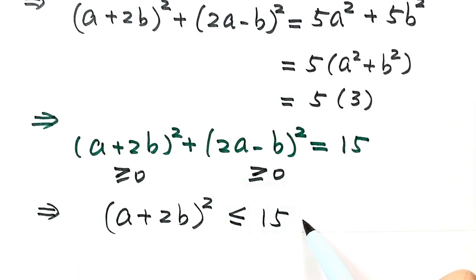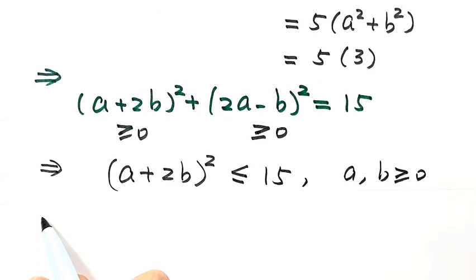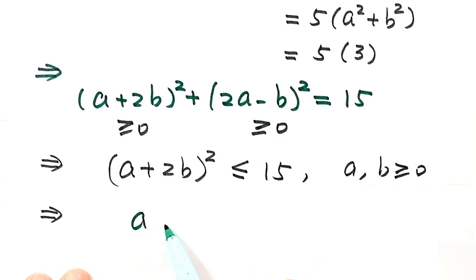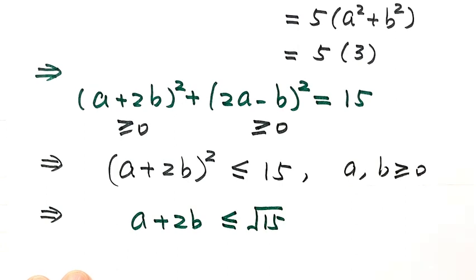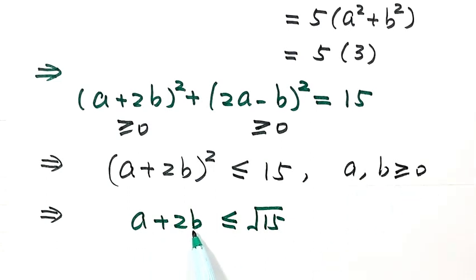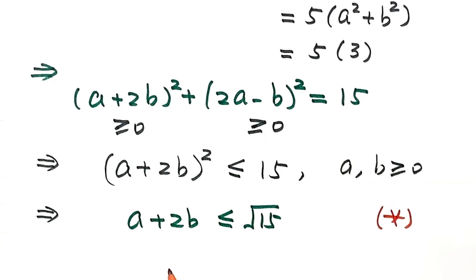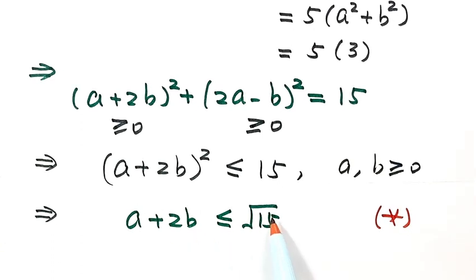Since a and b are both greater than or equal to 0, we know a plus 2b is also greater than or equal to 0. Taking the square root of both sides, we get a plus 2b is less than or equal to the square root of 15. Let's label this Result Star. But we're not done yet — we need to prove that the square root of 15 is actually reachable.